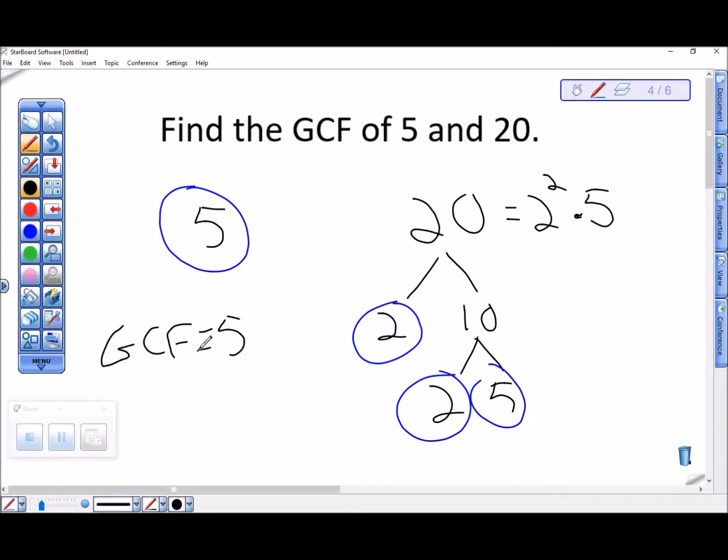Because 20 is divisible by 5, and so is 5. And certainly it couldn't be any bigger than 5, because I wouldn't be able to divide 5 by anything larger than itself.